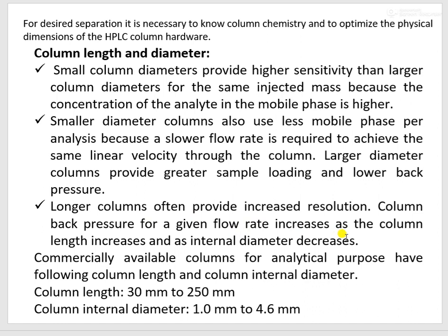Longer columns provide high resolution, but the back pressure will also be more with a longer column. Commercially available columns for analytical purposes have the following dimensions: column length can range from 30 mm to 250 mm, and column internal diameter for analytical columns ranges from 1 mm to 4.6 mm.